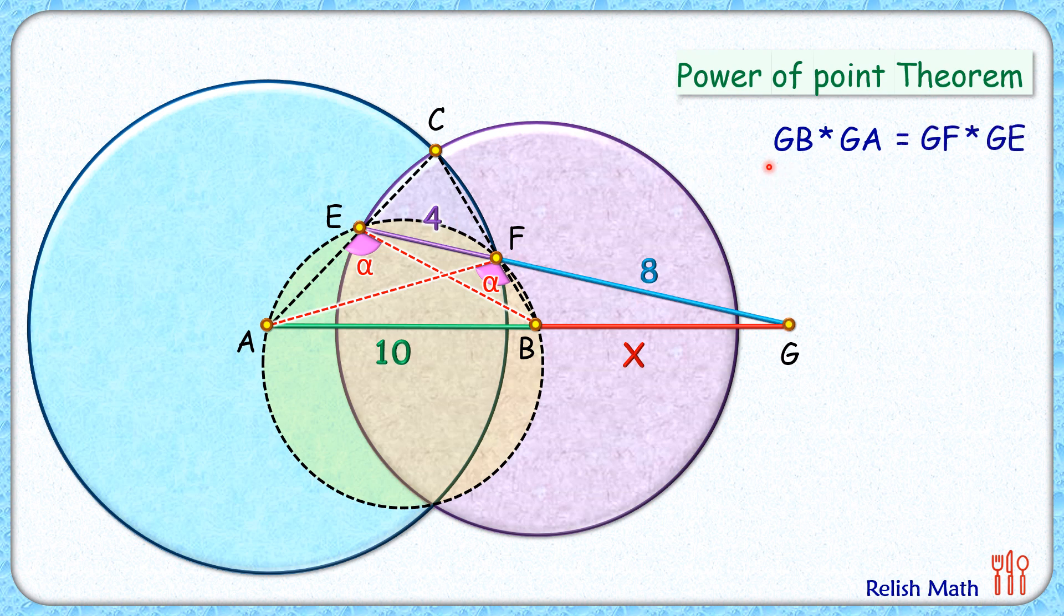Putting in the values: GB is X, and GA is X plus 10. Similarly, GF is 8 cm, and GE is 8 plus 4, or 12 cm.